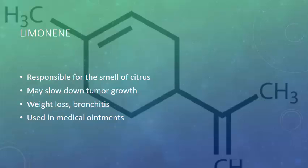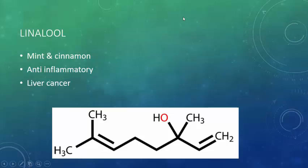Limonene — if you ever wanted to know what the shape of orange smell is, look no further. This terpene has been shown to slow down tumor growth in certain models, help in weight loss, and help fight the inflammation associated with bronchitis, and it is often used in medical ointment. Linalool is found in mint and cinnamon, has anti-inflammatory properties, and has been shown to be somewhat beneficial for certain cases of liver cancer.